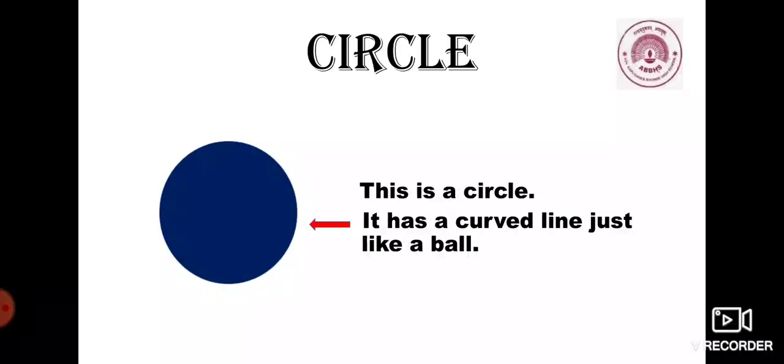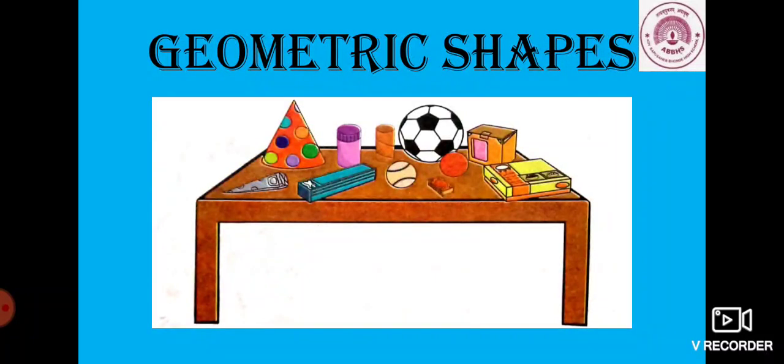This is a circle. It has curved lines just like a ball. So now, we know what basic shapes are.